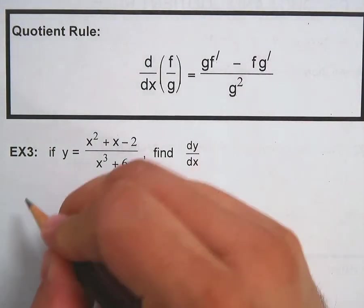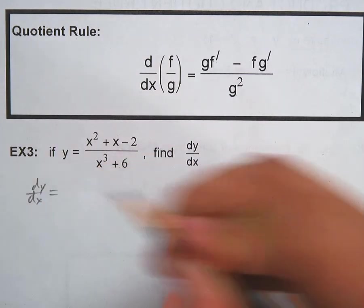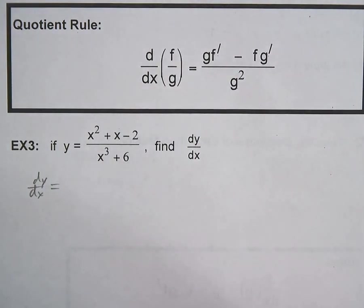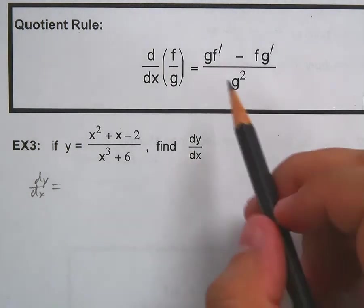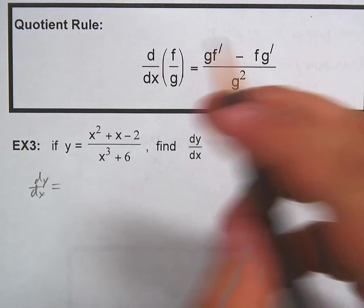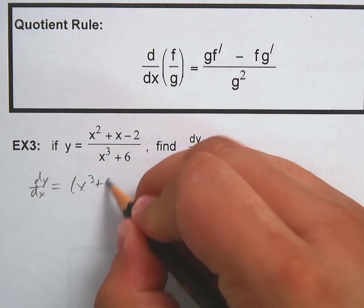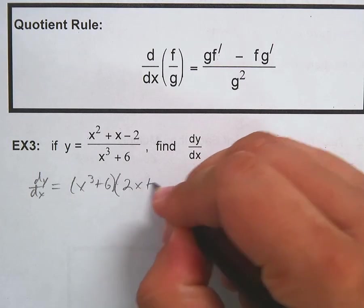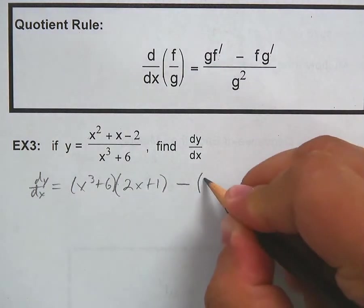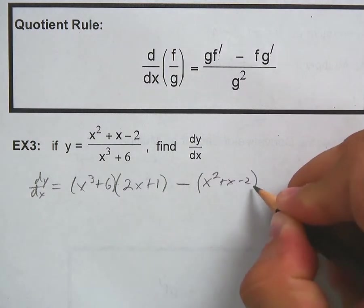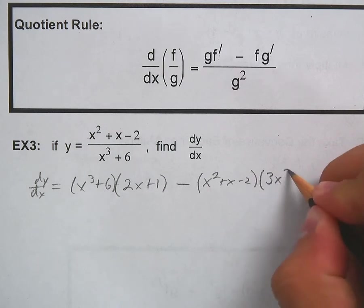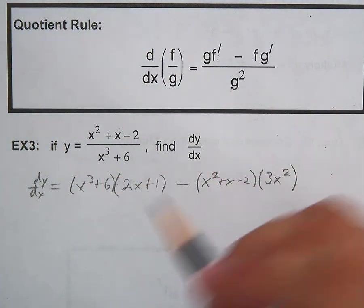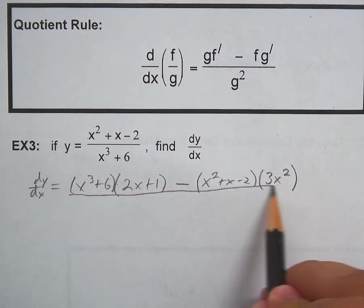Using dy/dx notation for the quotient rule example: dy/dx equals the bottom (x³ + 6) times the derivative of the top (2x + 1), minus the top times the derivative of the bottom. The derivative of the bottom is 3x² — drop the 3, subtract 1 from the exponent; the constant 6 drops to zero. All of this is over the bottom squared, (x³ + 6)².